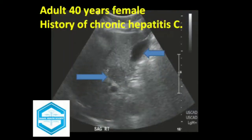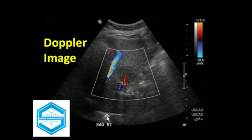This image belongs to a female patient of 40 years age who has a history of chronic hepatitis C. In this image, we can appreciate a relatively hyperechoic solid mass. This is the GB. Applying the color Doppler, the space-occupying lesion or hyperechoic solid mass shows central blood flow.